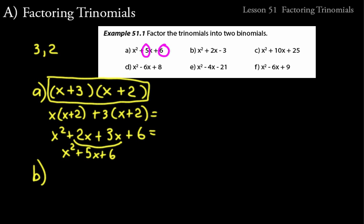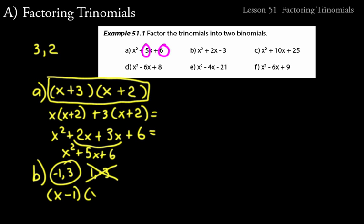Practice problem B: x² + 2x - 3. Think of two numbers that multiply to -3: options are (-1)(3) or (1)(-3). Adding them together must equal +2, so only -1 and +3 work, since -1 + 3 = 2. The other pair gives -2, which doesn't work. So we factor as (x - 1)(x + 3).